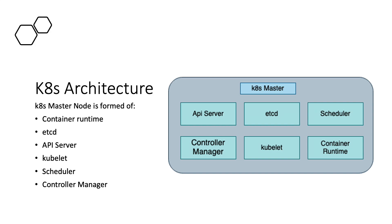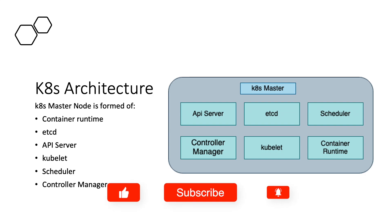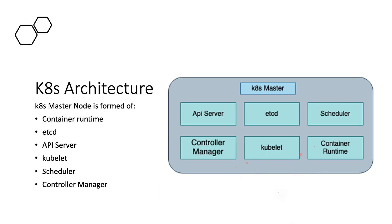The etcd is a tool that allows us to store configuration and information within the master node. It is a distributed, reliable key-value store where we store main configuration, SSH keys, passwords, and all sensitive information. The etcd is available to all worker nodes — containers running within those nodes can communicate with the master node to access information from etcd. It is only accessible via the API server; there is no other way to communicate with etcd.